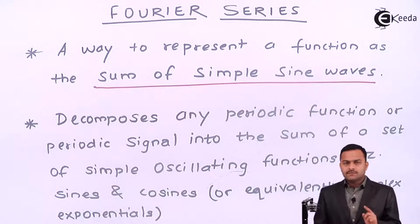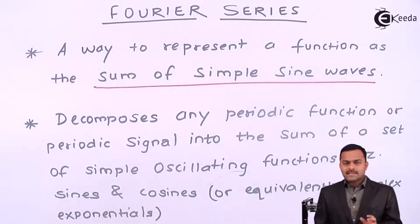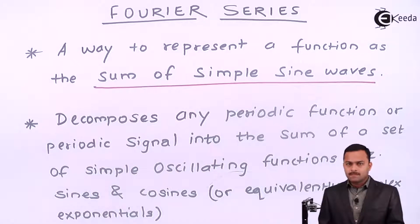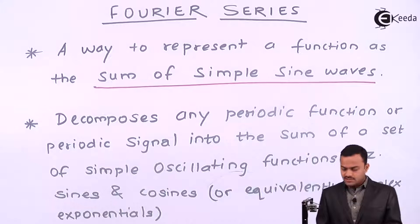The sinusoid which is completing one time period in a short span of time we consider that as a fundamental time period or a fundamental component. Except the fundamental component, whatever is left in the waveform in terms of sinusoids are called as harmonics. In other words, Fourier series decomposes any periodic function or a periodic signal into the sum of a set of simple oscillating functions, namely sines and cosines.